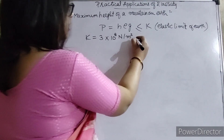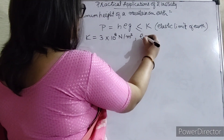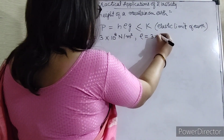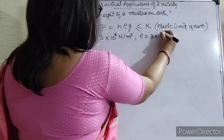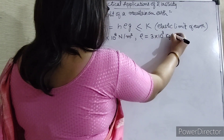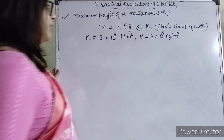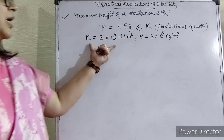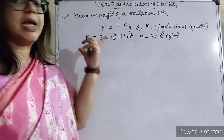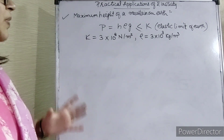Also, the rocks have a density of 3 × 10³ kg per meter cube, that is 3,000 kg per meter cube. This is the elastic limit of earth — the maximum pressure the earth can sustain.